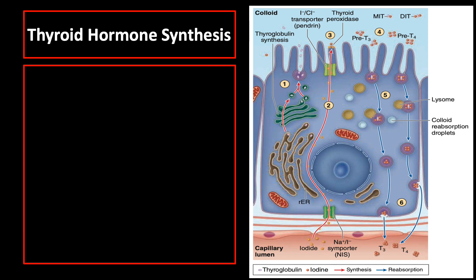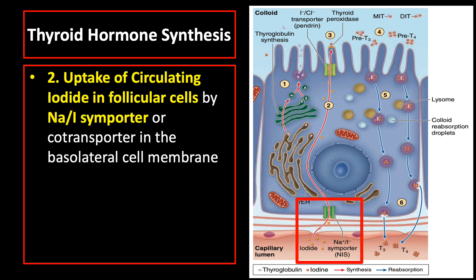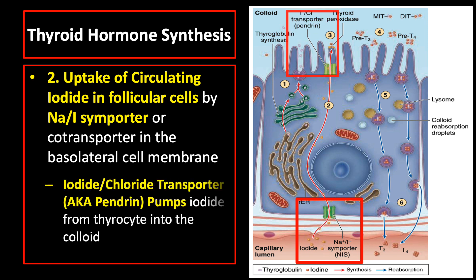The next step is the uptake of iodide from blood by sodium iodide symporters in the thyrocytes' basolateral cell membranes, which allows for 30-fold concentration of dietary iodide in thyroid tissue relative to plasma. An apical iodide-chloride transporter, also called pendrin, pumps iodide from the thyrocytes into the colloid.